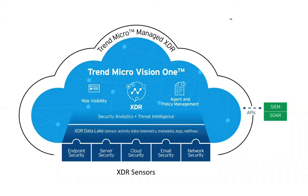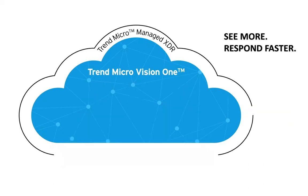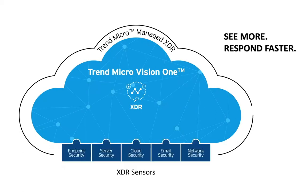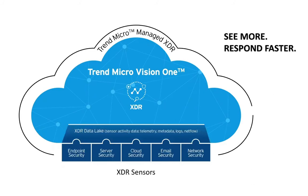Trend Micro Vision One is a purpose-built threat defense platform that stands above typical XDR solutions to help companies see more and respond faster. At its core are deep and broad XDR capabilities, starting with native sensors and protection points across layers, providing an unmatched understanding of the activity data pulled from multiple layers across the customer's environment.